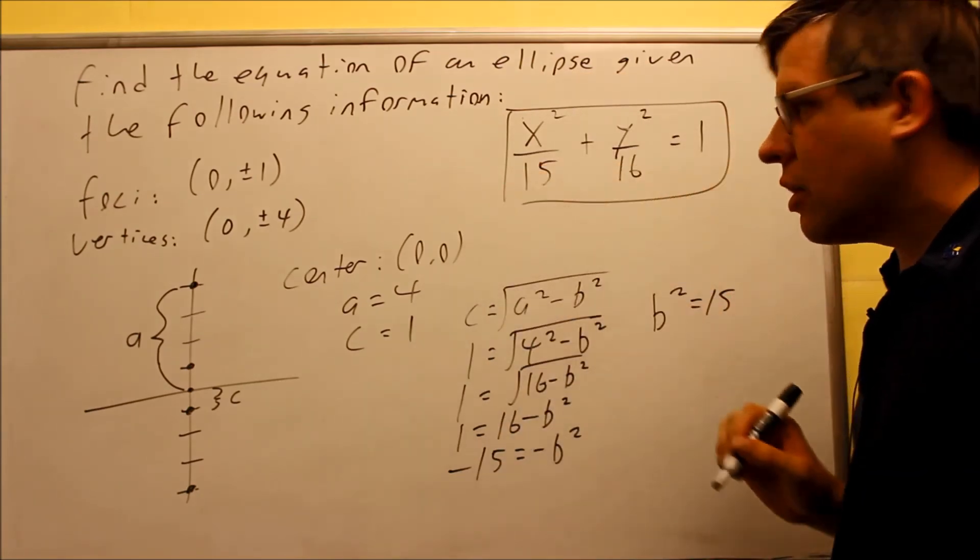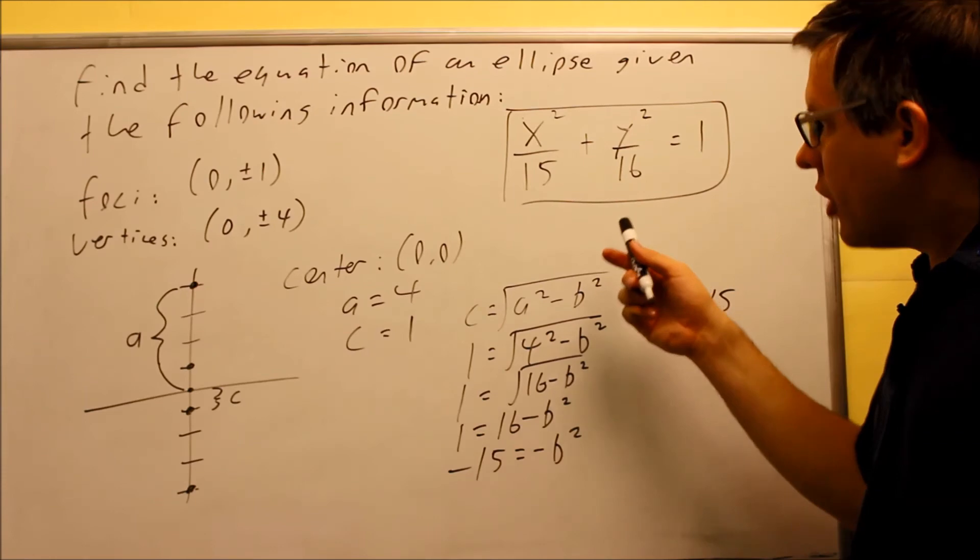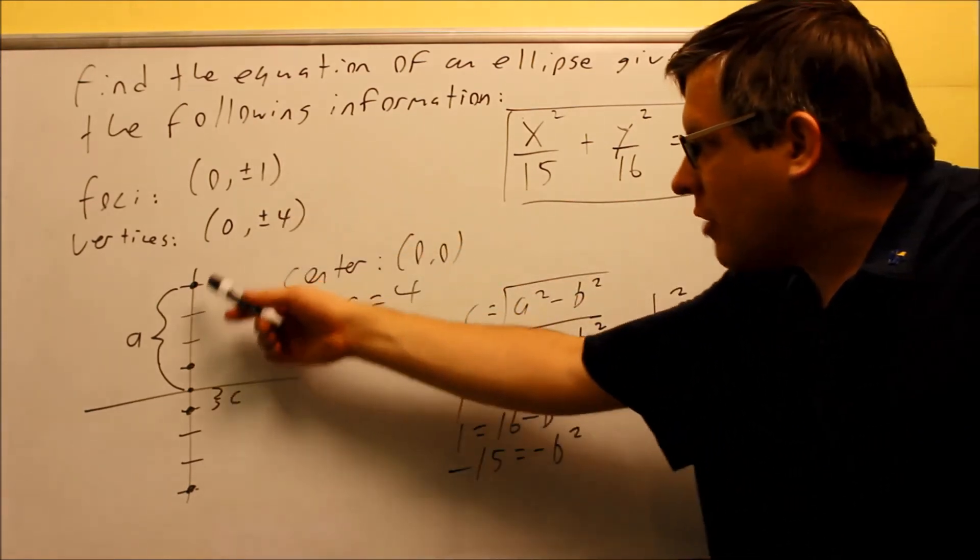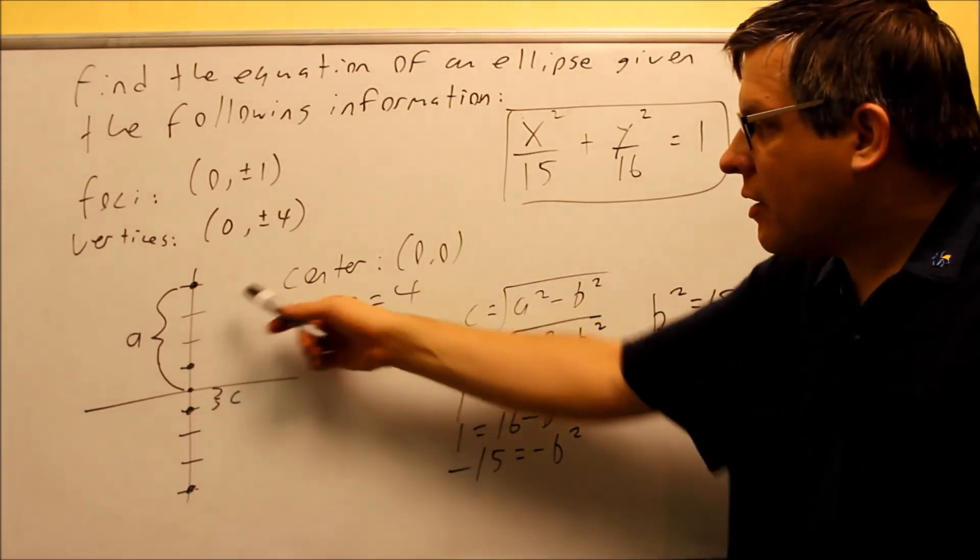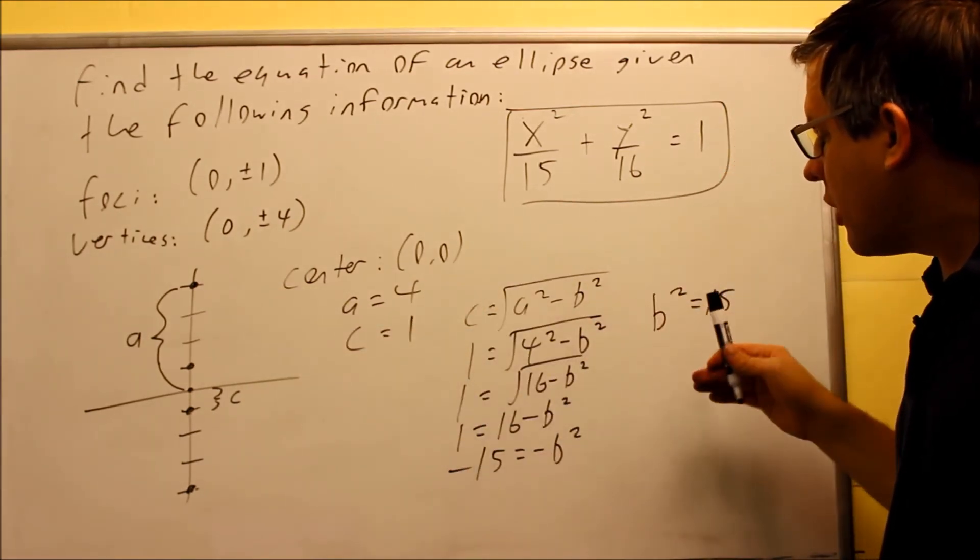So this right here would be the answer to the question. I want to know the equation for the ellipse that has these pieces of information. So again, I found that by looking at your plot, we can read a bunch of values off of that. We solved here for b squared. Now again,